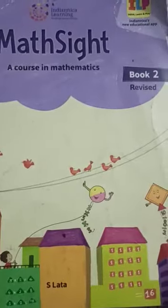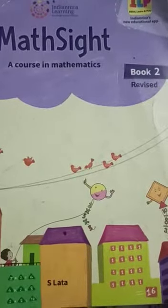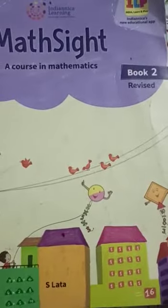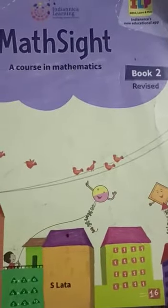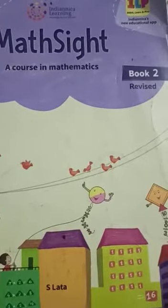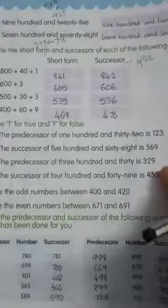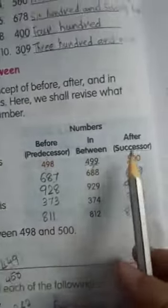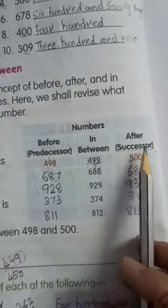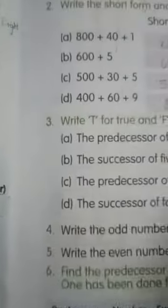Assalamu Alaikum students, welcome back to your online class of maths. In today's class we are continuing the fifth chapter, that is Numbers Beyond 100. In the previous class we learned about before, after, and between numbers. Before numbers are also called predecessor and after numbers are also called successor. In Exercise 5.4 we have completed till the second question.